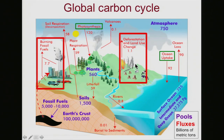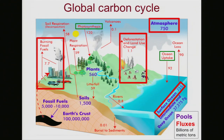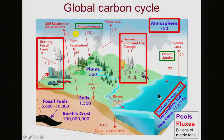Through deforestation, as we knock down the rainforests and clear land for schools and parks and villages, that's killing trees and taking carbon dioxide from a normal plant system to bare Earth, generating CO2 going into the air. About 750 billion metric tons of carbon dioxide has typically been in the atmosphere, and a similar amount in the ocean.